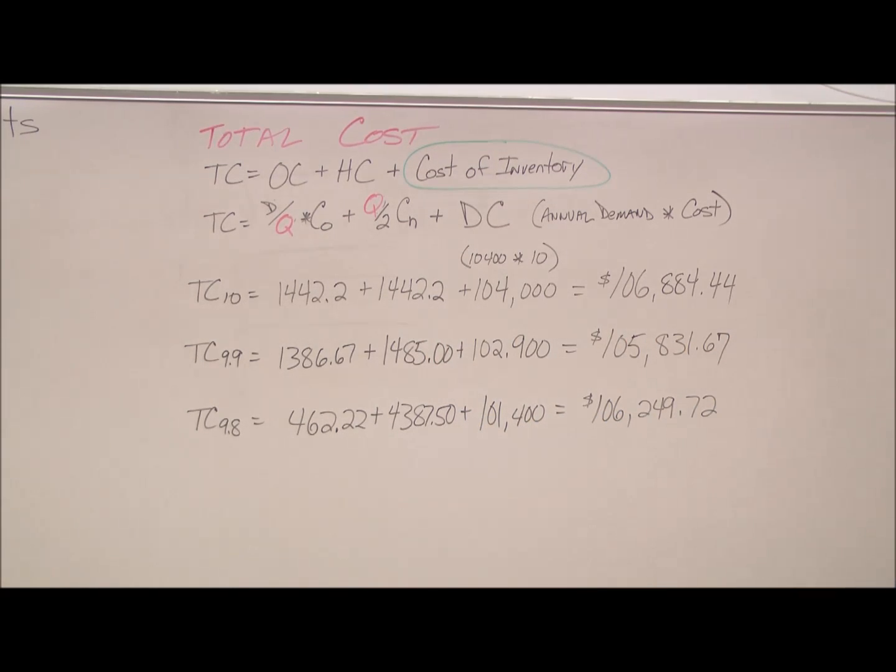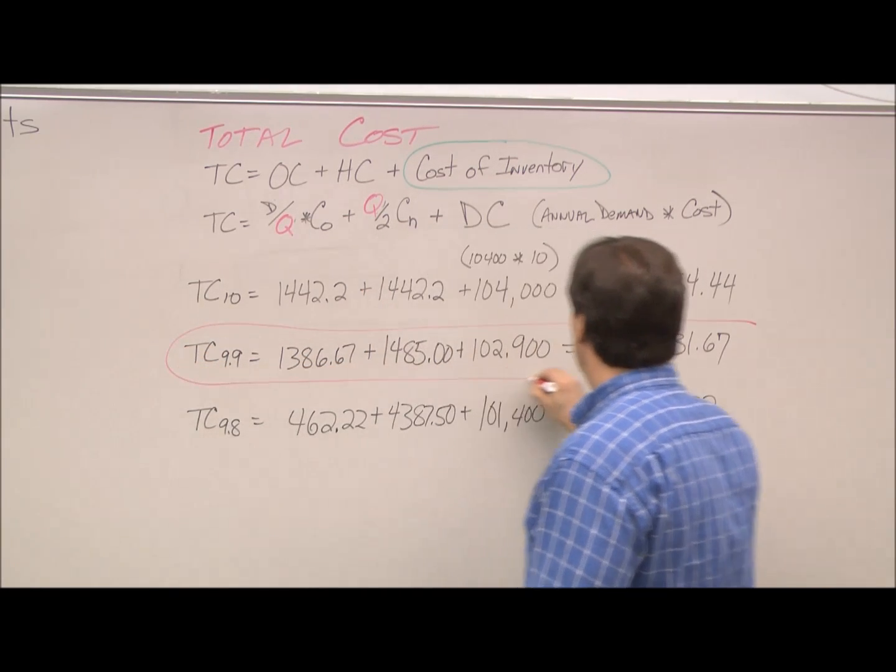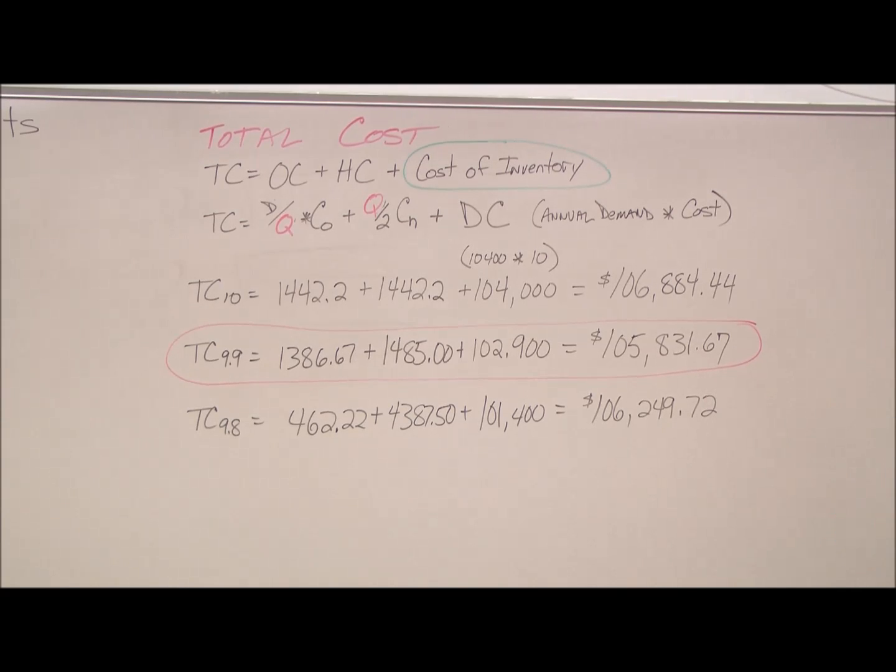And again, the solution for this problem, and to keep Mr. Richards happy or Mr. Jaggers happy, is we go for the lowest cost here. Of course, 105 is less than 106. So we would change our order quantity to 1,500 in order to get the $9.90 price.